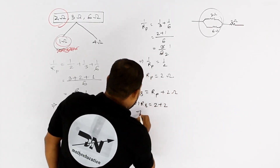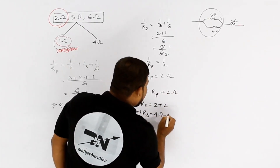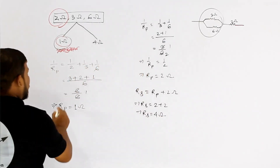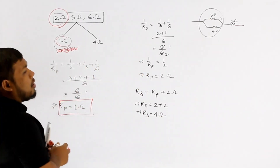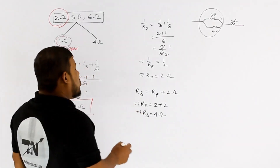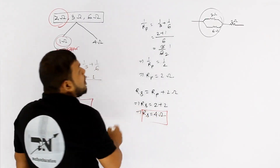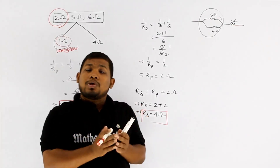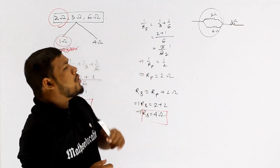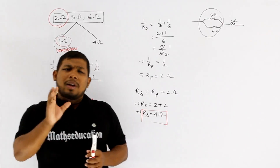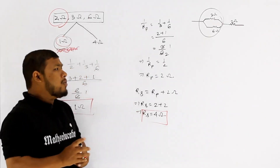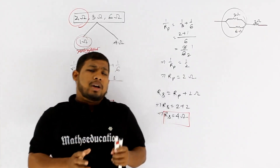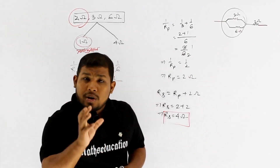2 plus 2 implies that R is equal to 4. If you have a question, you can work through it at the same time. Please write down your paper. This is a very important question.